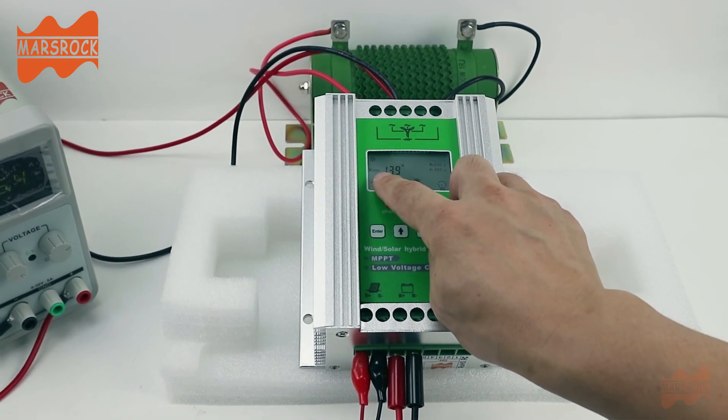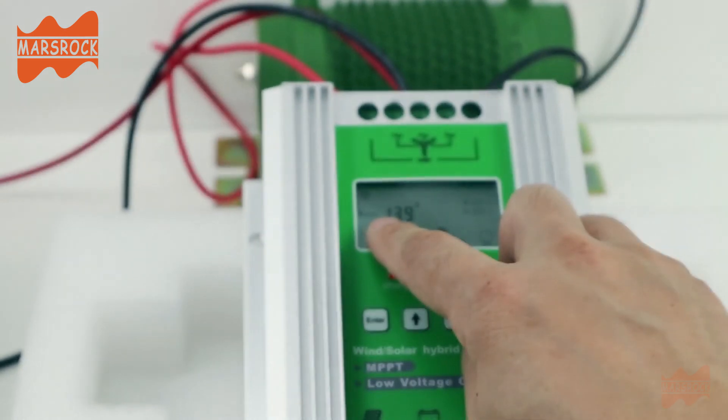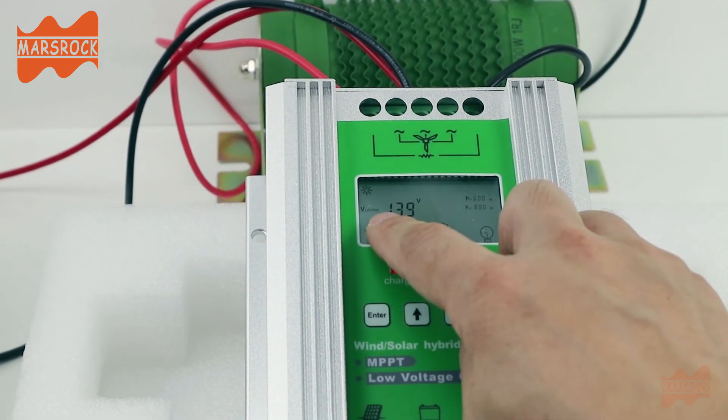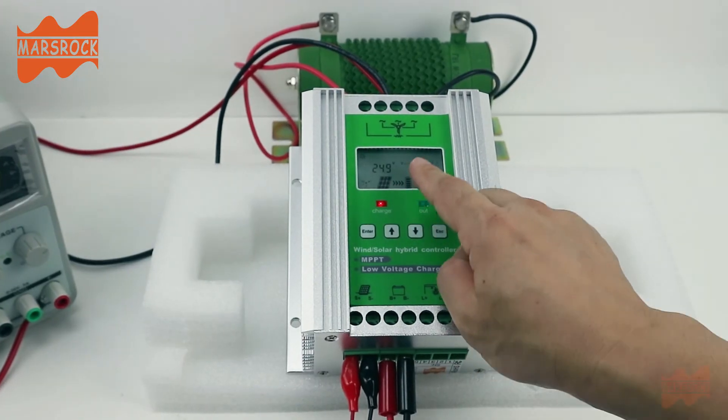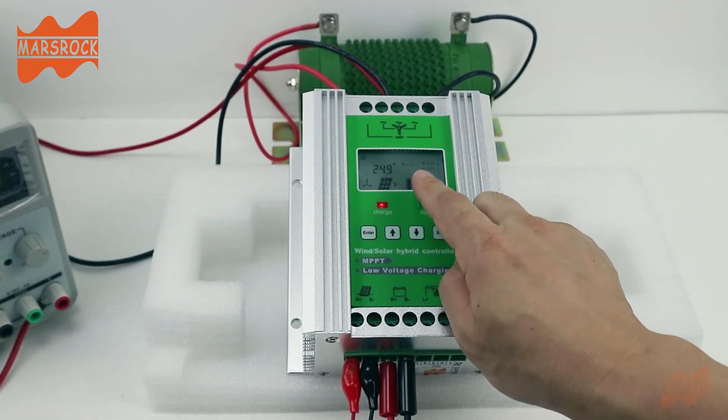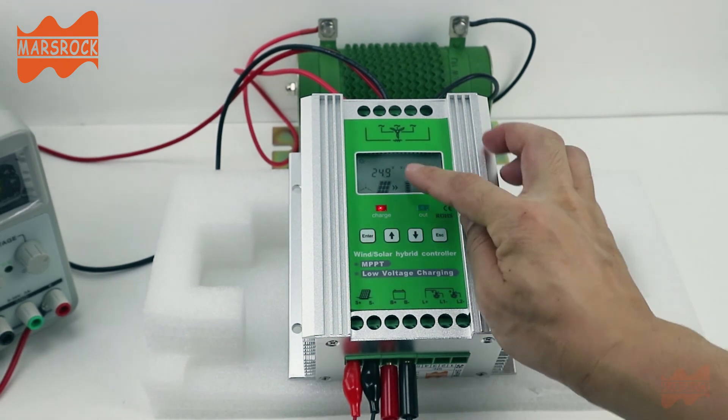Here you can modify the under voltage setting. Here's showing the wind charge voltage.